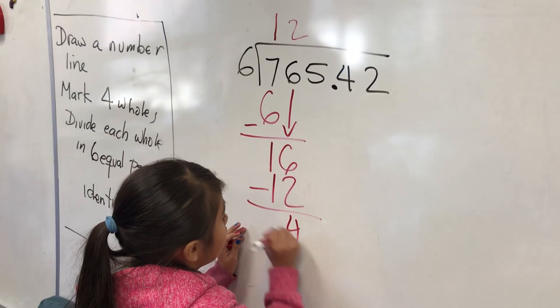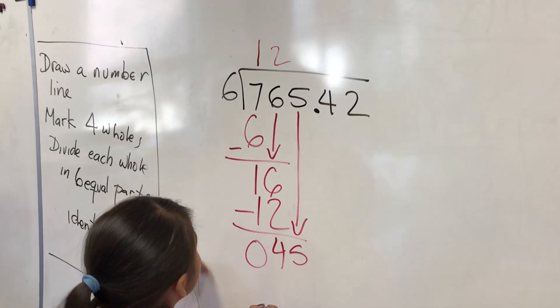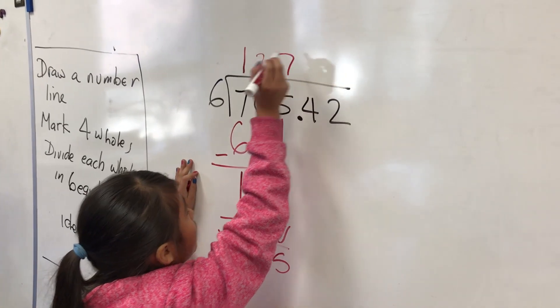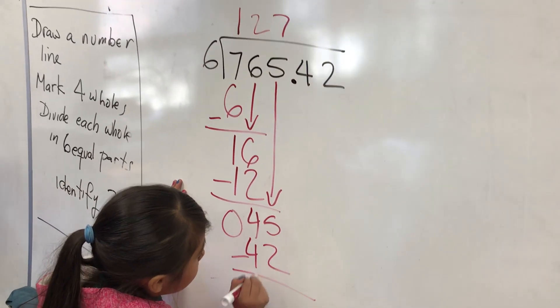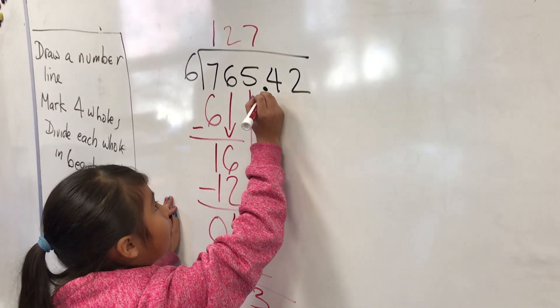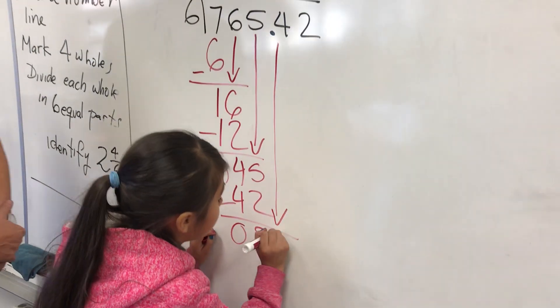Bring down the 5. 45 divided by 6 equals 7, because 7 times 6 equals 42. Subtract 5 minus 2 equals 3. And a decimal point here. And bring down the 4. 24 divided by 6 equals...